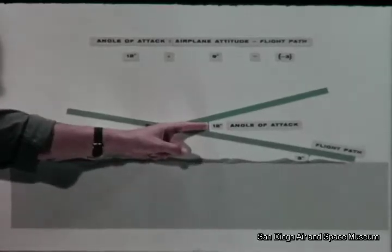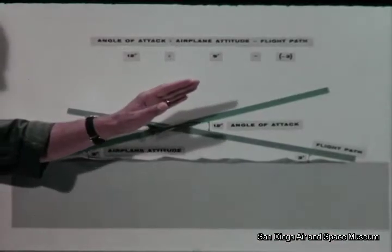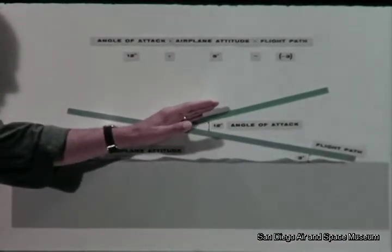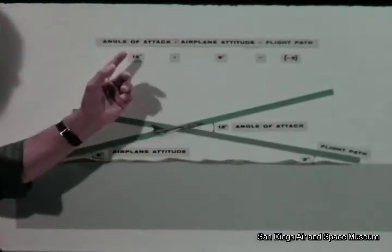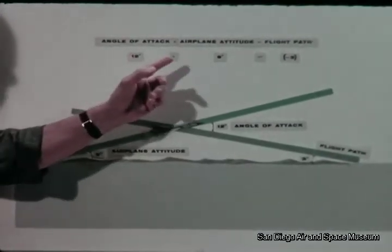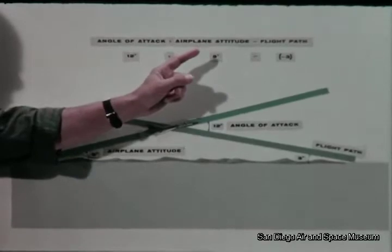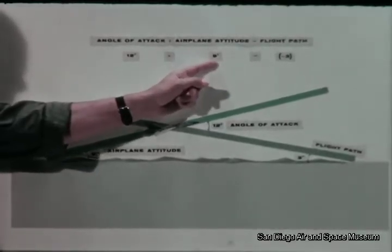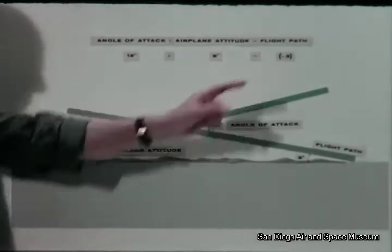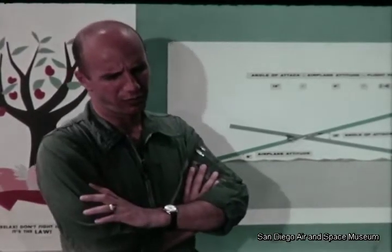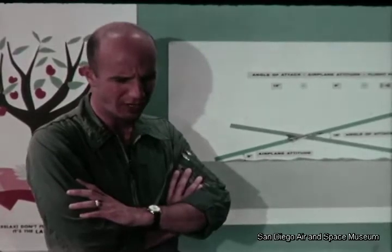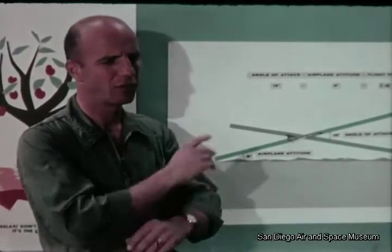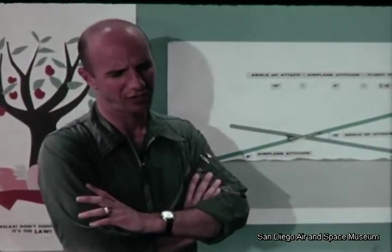There is the angle of attack. The airplane attitude is defined as the angle between the longitudinal axis and the horizontal reference. Angle of attack is equal to the algebraic difference between airplane attitude and flight path. Normally an F-106 will fly its approach at about a 12-degree angle of attack with an attitude angle of 9 degrees, which is what we saw this man flying on the last approach.